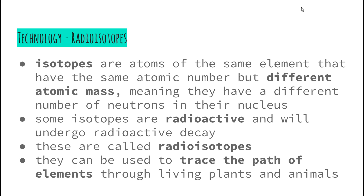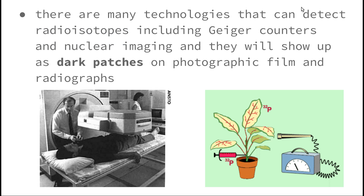Radioisotopes can be used to trace the path of elements through living plants and animals. The role is to trace the path of elements, and we use radioisotopes. So we're already on our way to answering our syllabus dot point, however we need to look at specific examples.